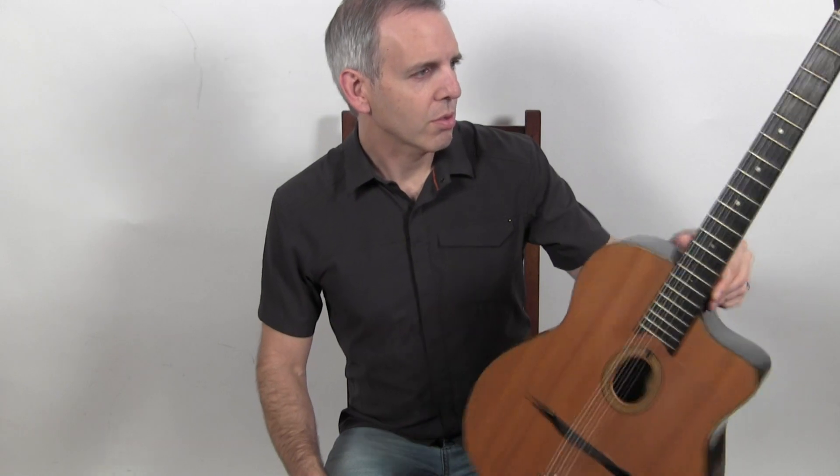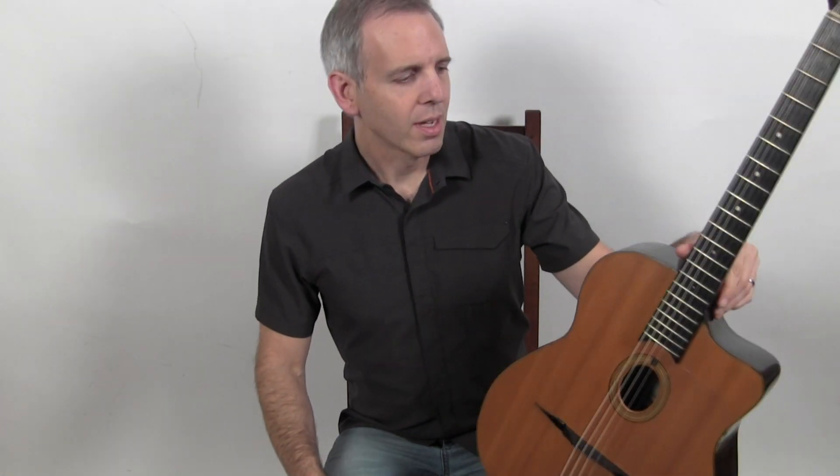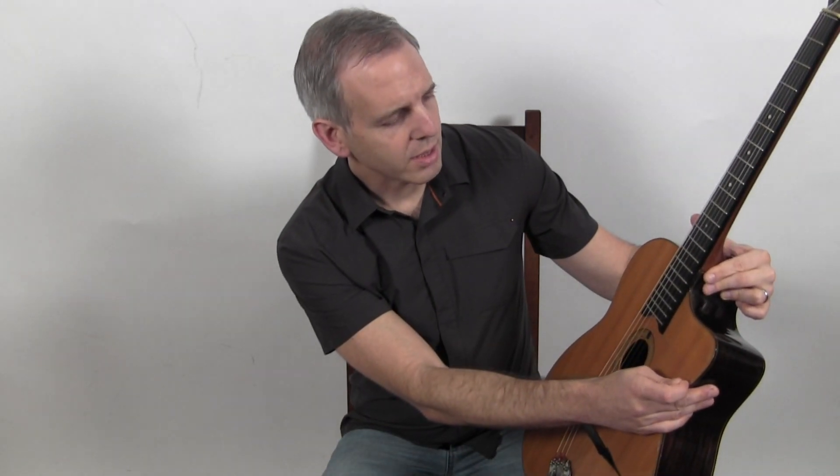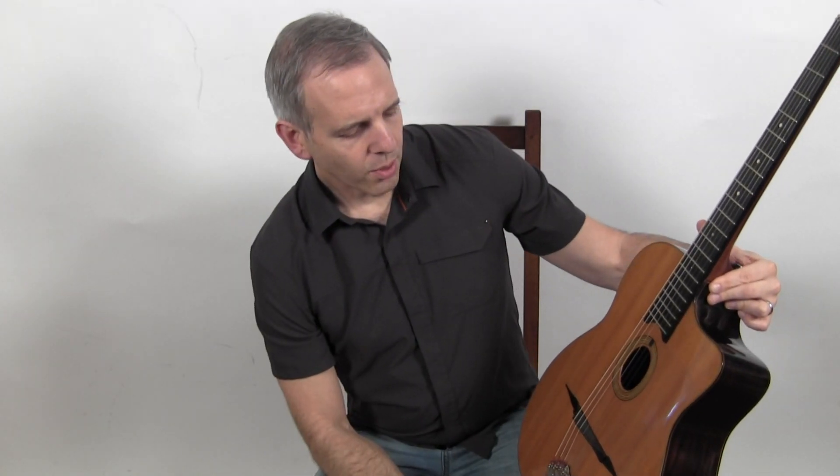These later 70s Castelluccias are very Selmer-like in their design. In fact, almost, I wouldn't say identical, but very much a Selmer-inspired guitar with some slight differences, you know, more rounded cutaway.